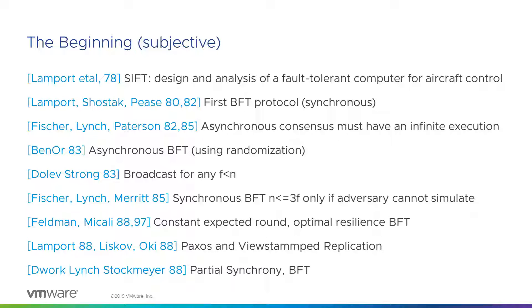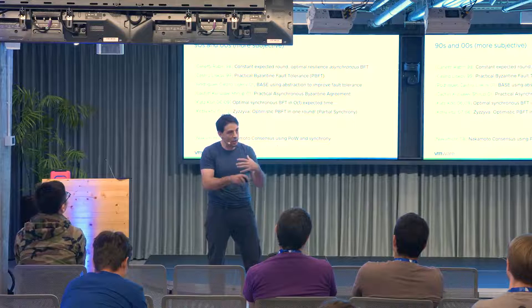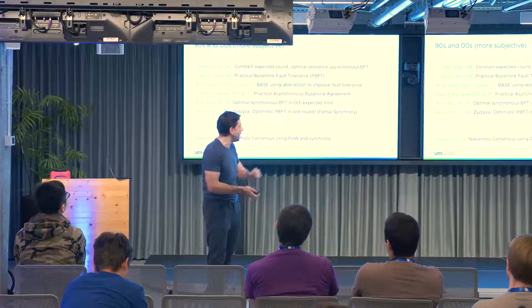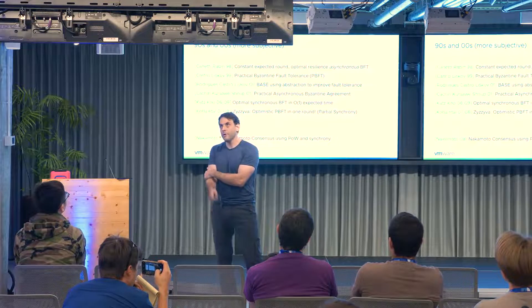In the 90s and 2000s, Ben-Or had a constant-round protocol for Byzantine agreement in the asynchronous world with huge impact on connections to multi-party computation. The next landmark is Castro and Liskov's Practical Byzantine Fault Tolerance — PBFT — probably one of the most influential papers in the blockchain world today, since many systems using the state machine replication approach for Byzantine fault tolerance are based on this work.